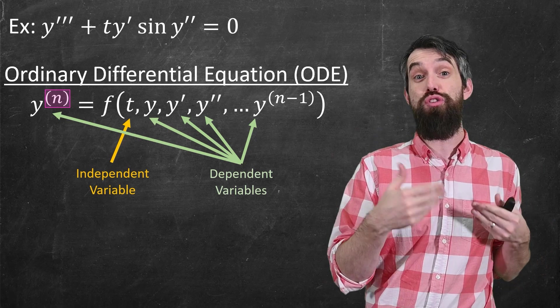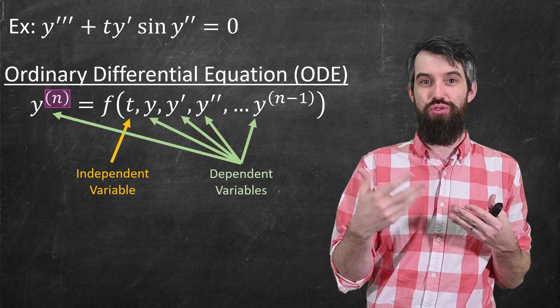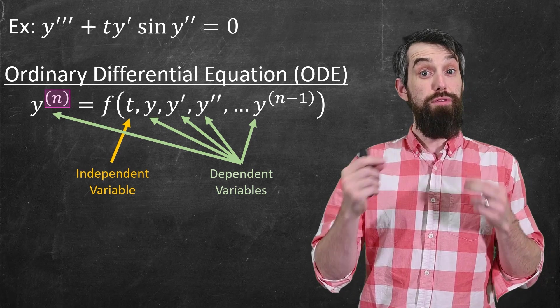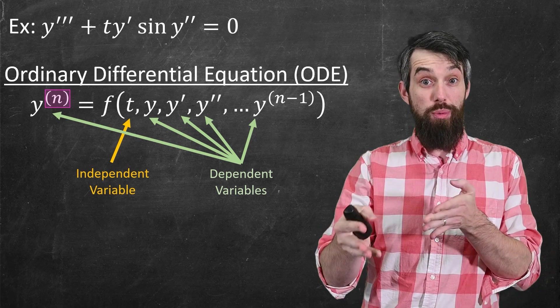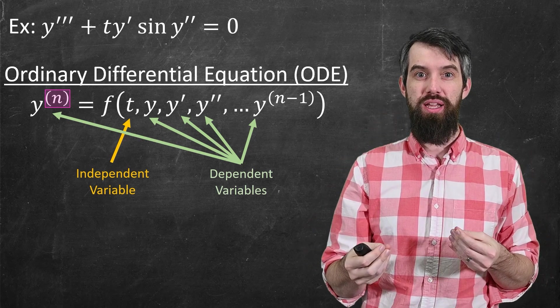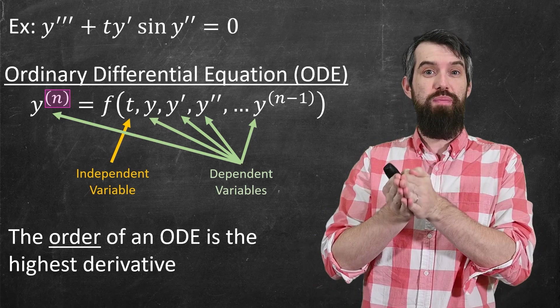And so your nth derivative with respect to t depends on the previous derivatives, the lower order derivatives, and the independent variable t. Now, differential equations have different types of properties, and one of them is referred to as the order of a differential equation.